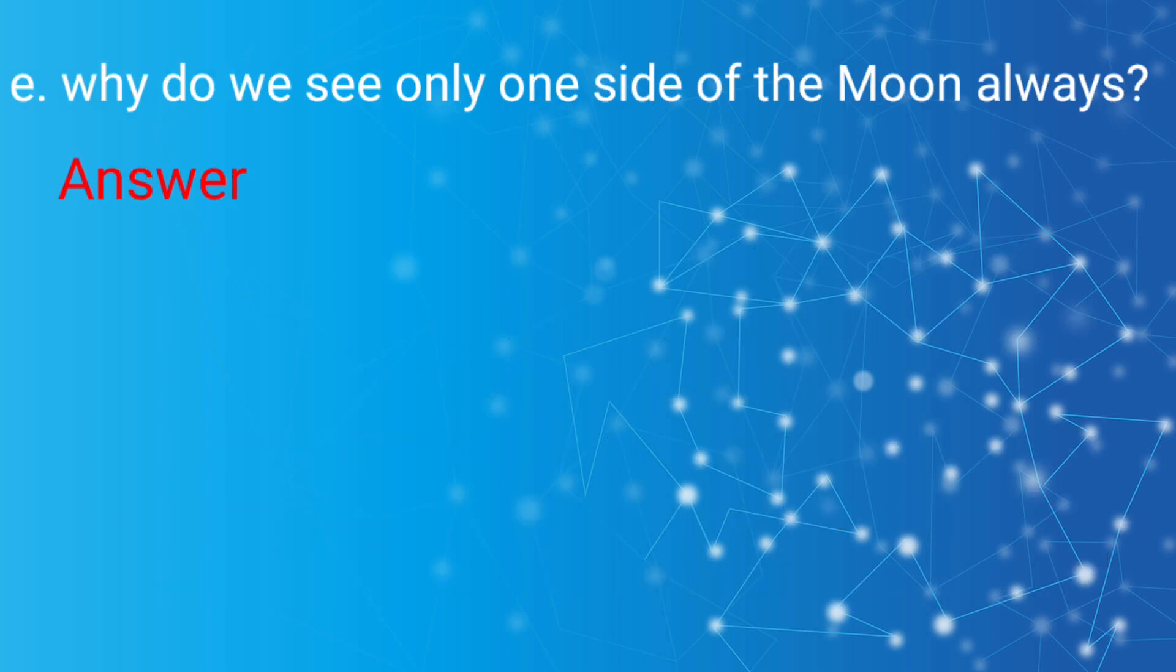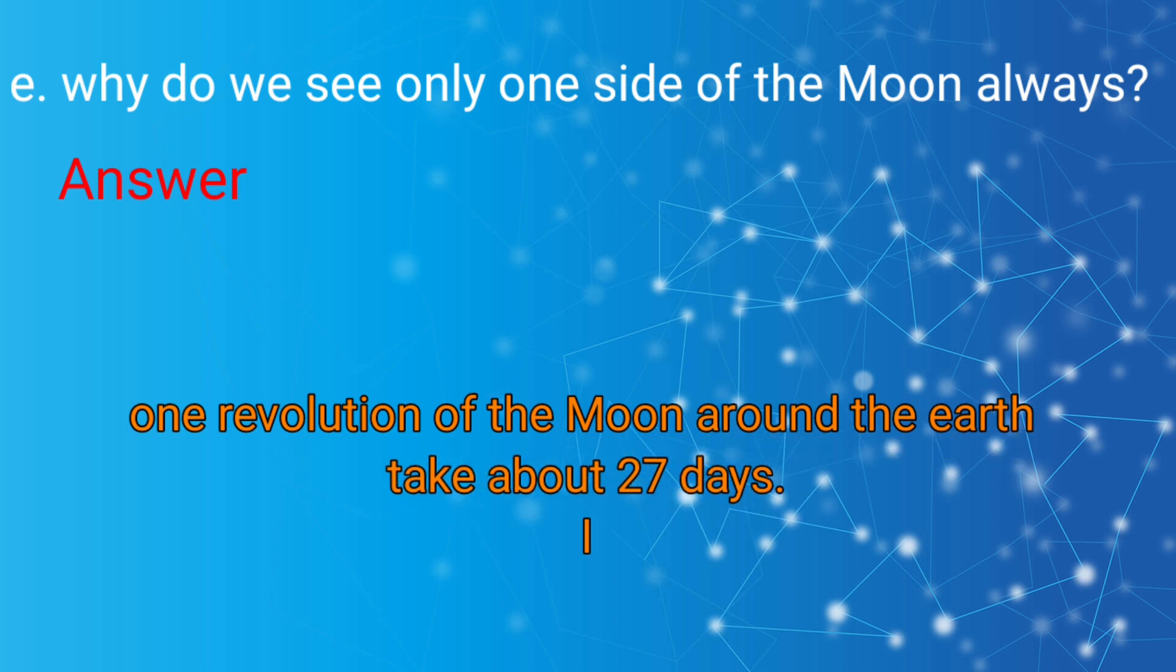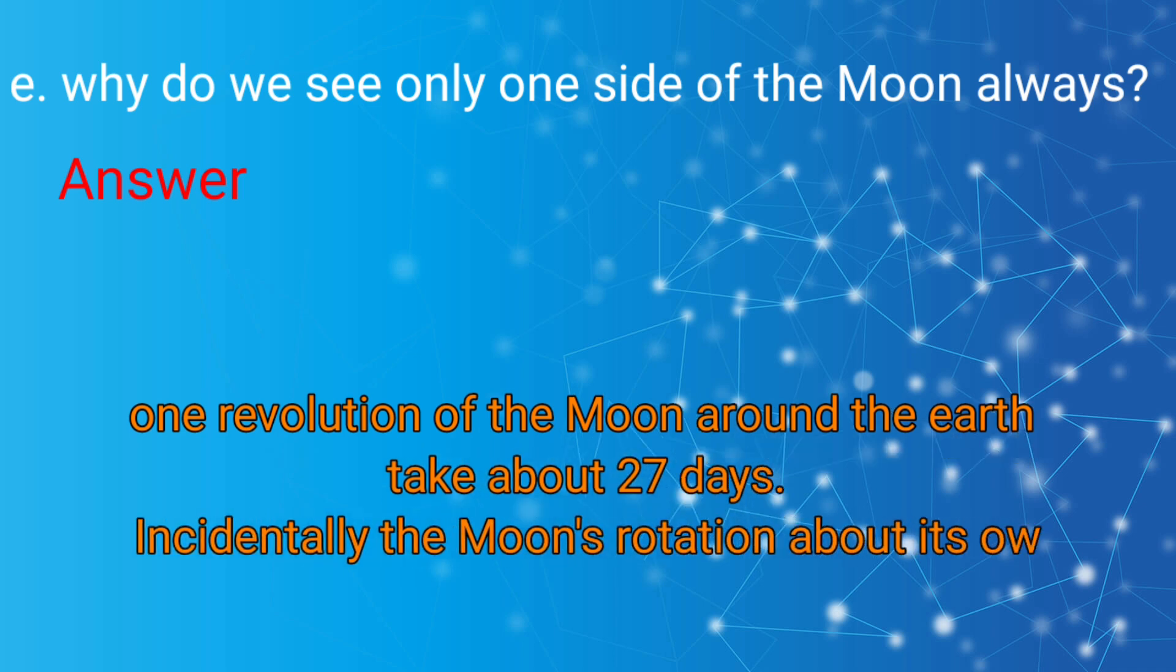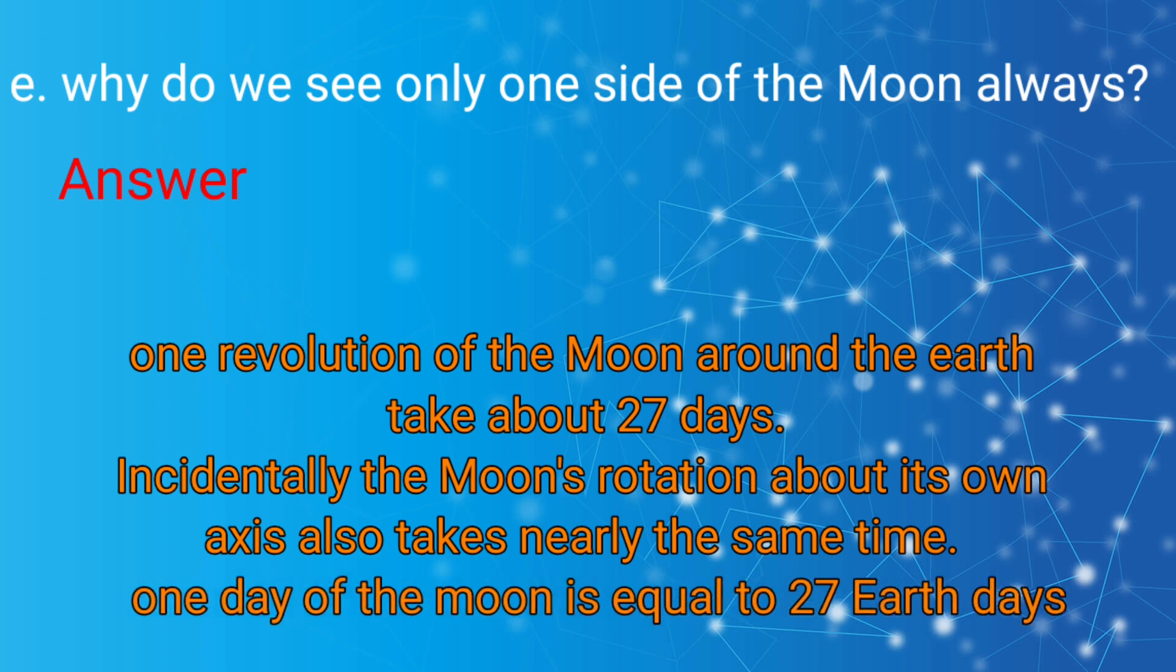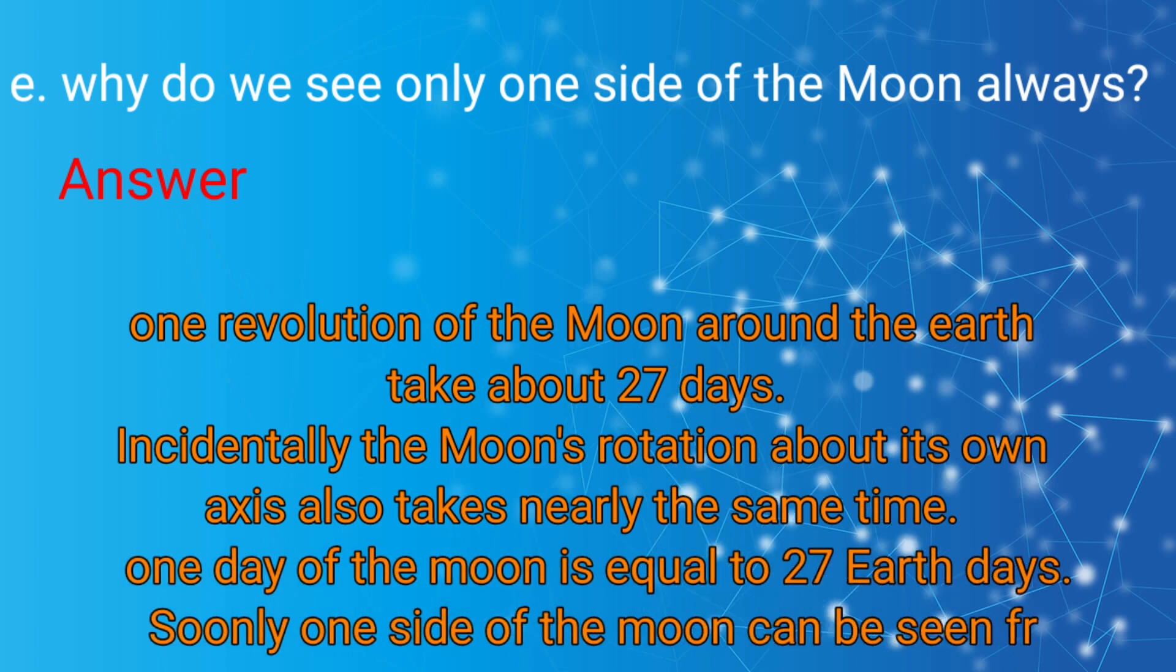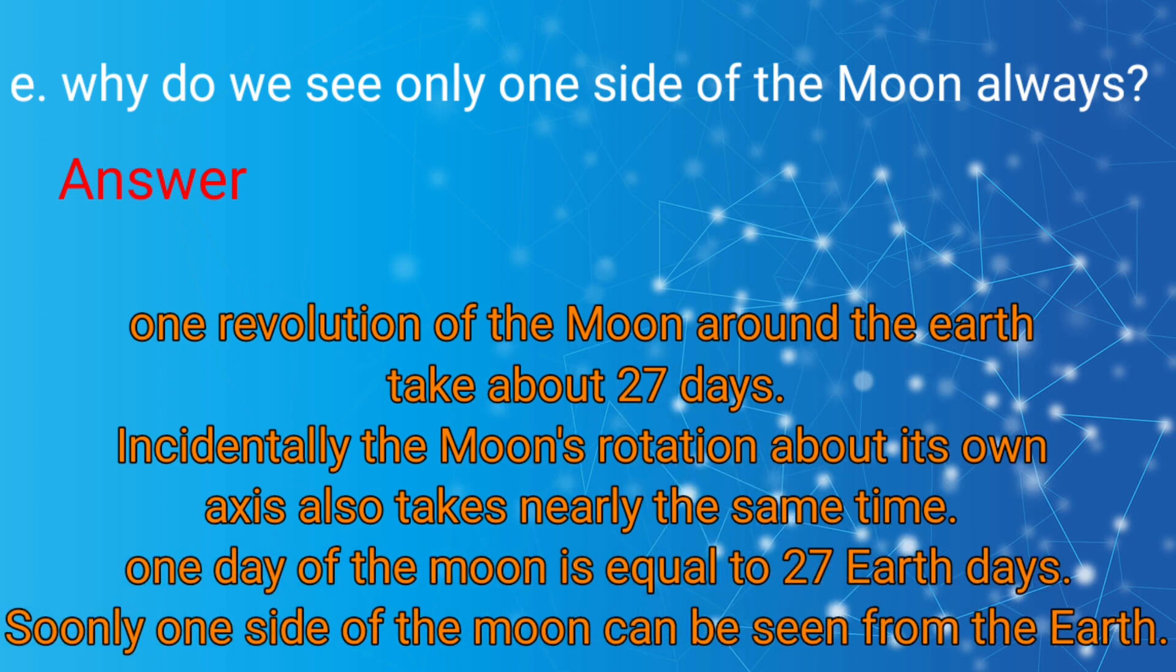E: Why do we see only one side of the Moon always? Answer: One revolution of the Moon around the Earth takes about 27 days. Incidentally, the Moon's rotation about its own axis also takes nearly the same time. One day of the Moon is equal to 27 Earth days, so only one side of the Moon can be seen from Earth.